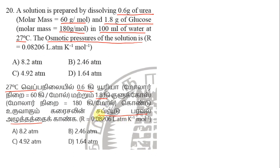What is the solution? If you look at the solution, urea and glucose, this is the solution. Urea is 0.6 gram and glucose is 1.8 gram.